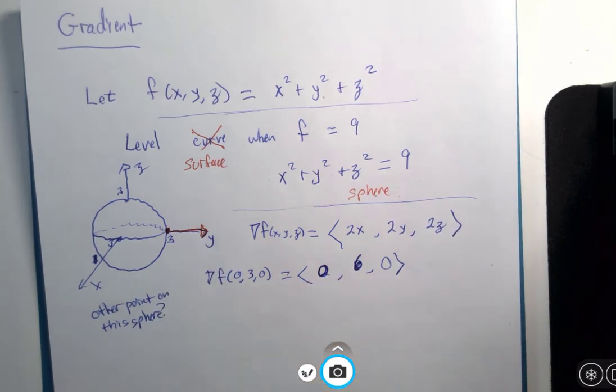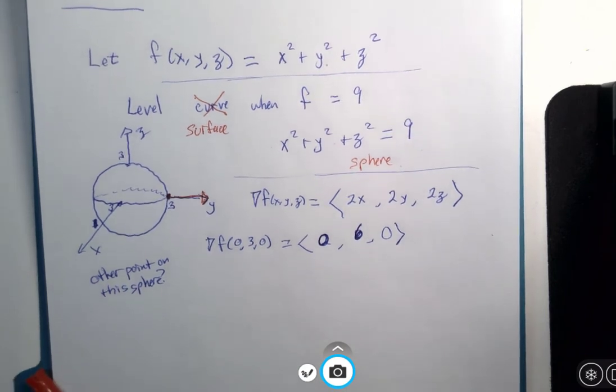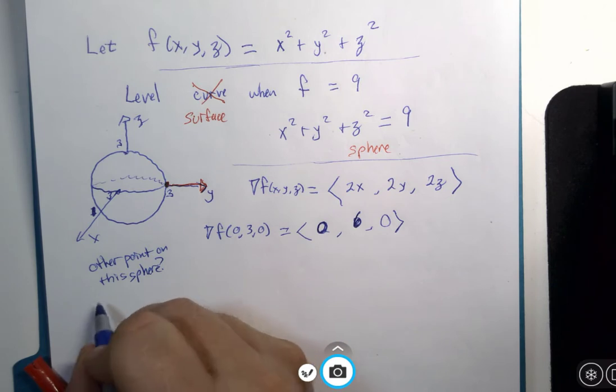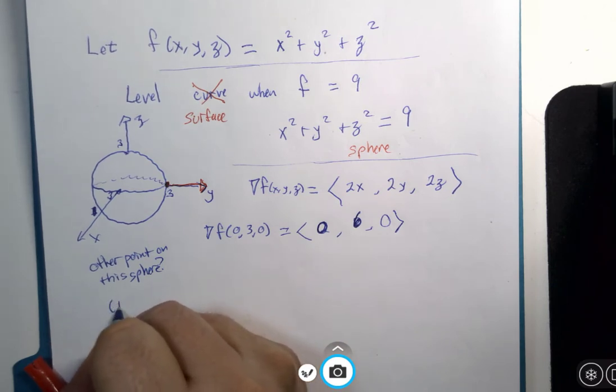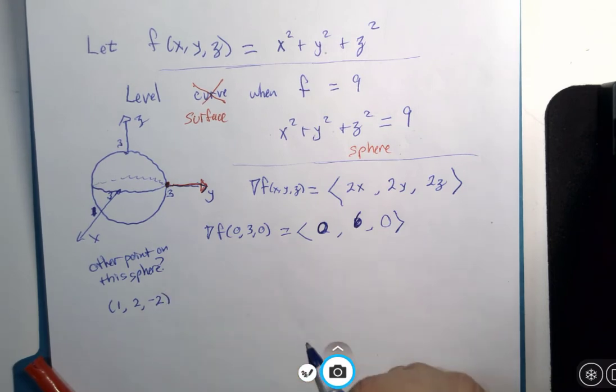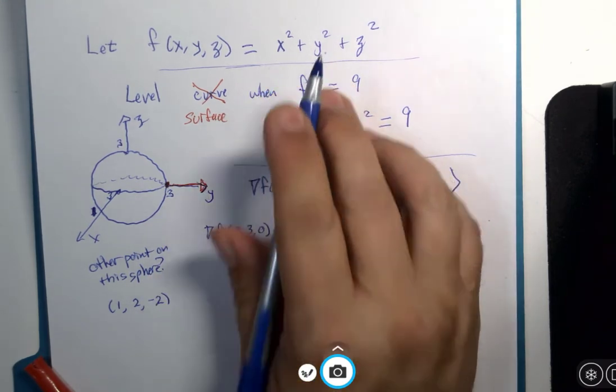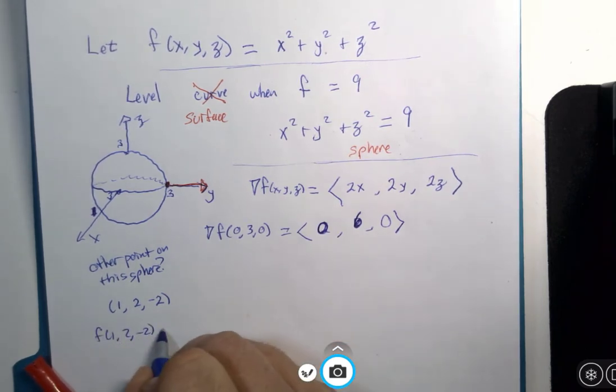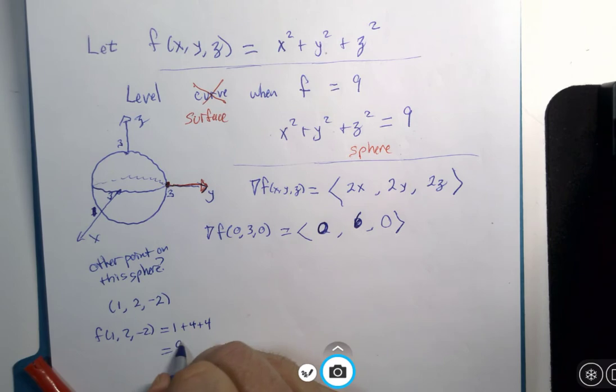So, how about this one? I wonder if we use the point 1, 2, negative 2. If I use my function here, 1, 2, negative 2. 1 squared is 1, 2 squared is 4, negative 2 squared is 4. Aha! That's 9.